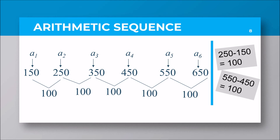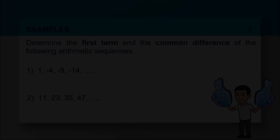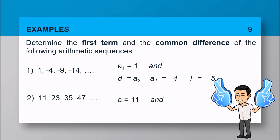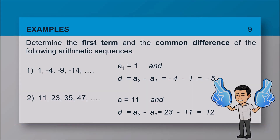Examples: determine the first term and the common difference of the following arithmetic sequences. Number one: 1, -4, -9, -14. The first term is 1. To get the common difference, subtract the first term from the second: negative 4 minus 1 equals negative 5. For number two: 11, 23, 35, 47, and so on. The first term is 11. Subtract 11 from 23, so the common difference is 12.